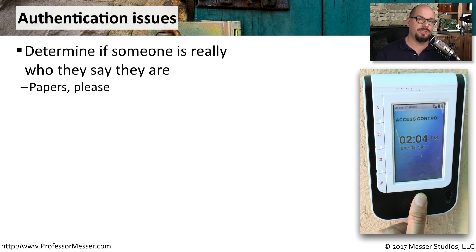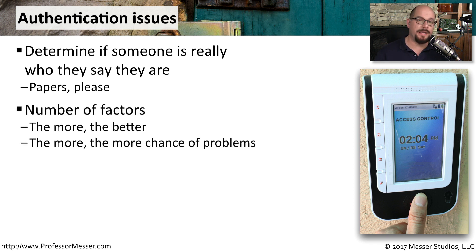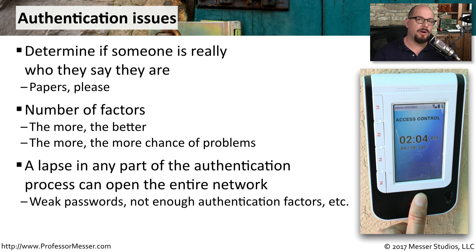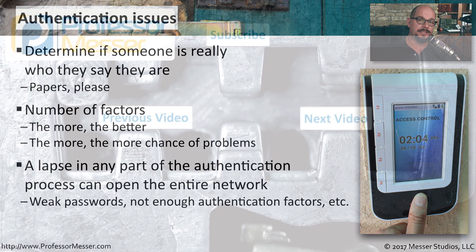Authentication is also a common security issue, used by every single person connecting to the network. They're providing a number of authentication factors, such as a username and password, a thumbprint, or a one-time access code. If any part of this authentication process fails, you may find that people are not able to gain access to the resources they need — or perhaps even worse, we allow people who don't have the proper access into parts of the network where they never should have gained access.